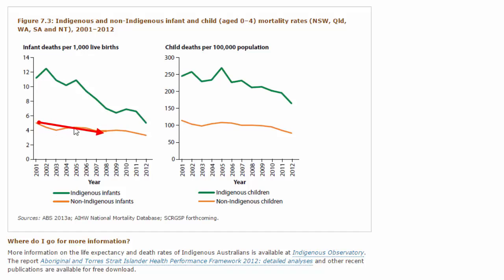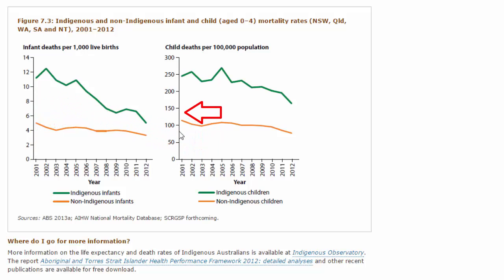There is a much slower decline in non-Indigenous deaths for infants. Now, you always need to, when you're looking at graphs side by side, make a comparison of what the axis is saying. If you look at the data points here, the scale is only increments of 2, whereas if you look at this one, the scale is increments of 50. You have a significantly different rate in mortality from infants to child deaths. Let me give you an example of how to create a line graph in Excel and show you about the differences in the scale.